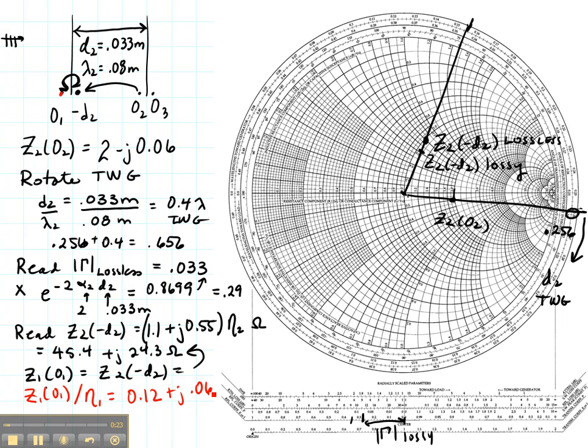Remember, this is now normalized. There are no ohms. So let's plot that one on the Smith chart also. Real part of 0.1 and imaginary part of 0.06 is going to be right about there. So this is Z1 at O1.